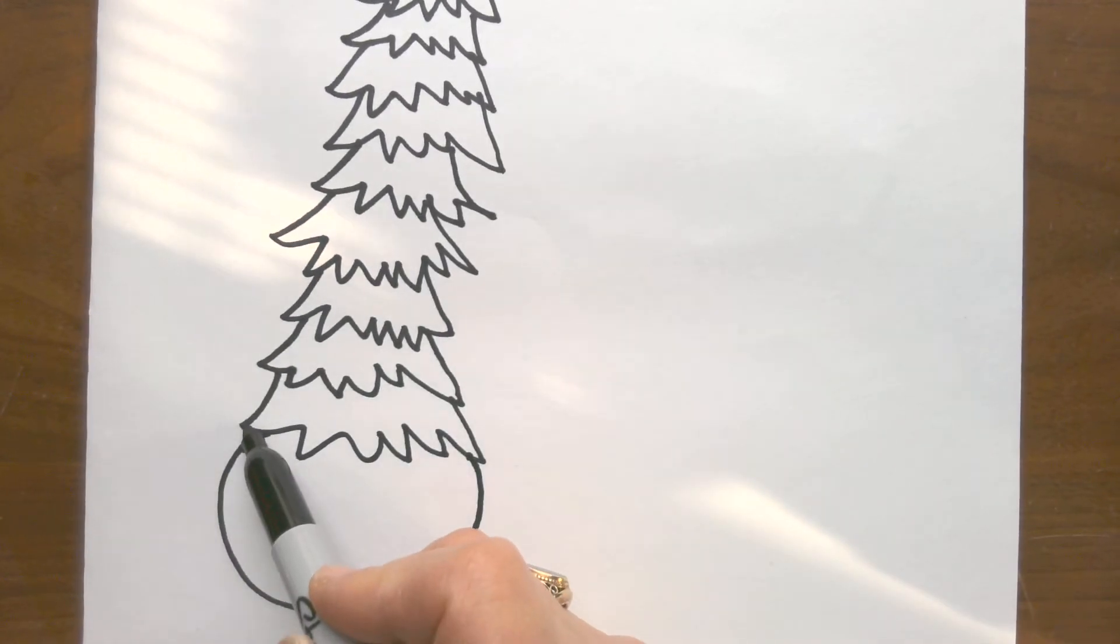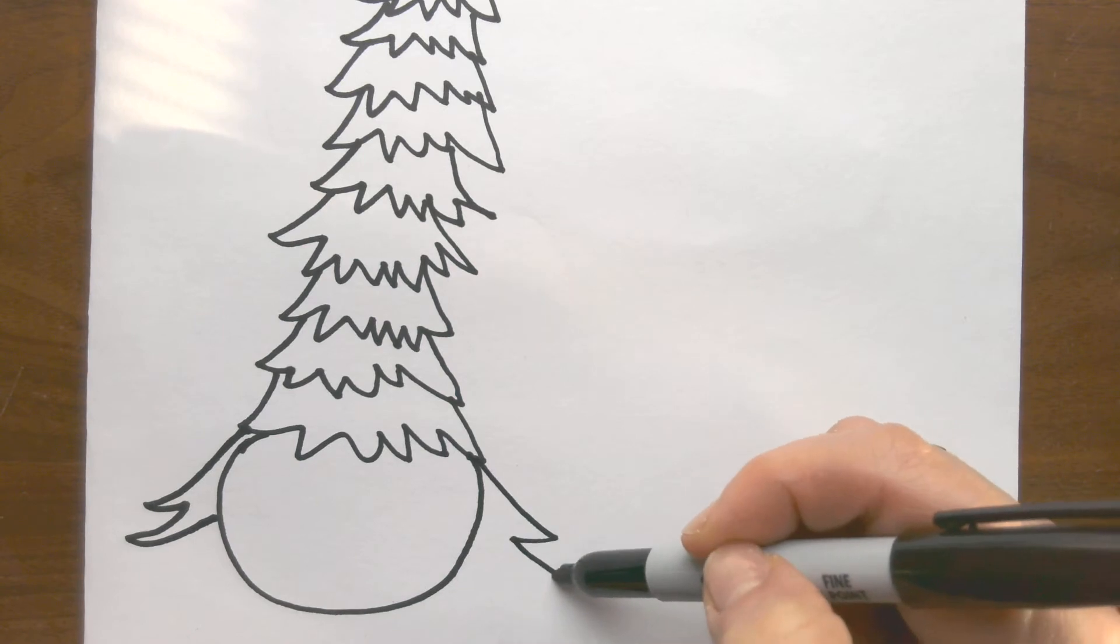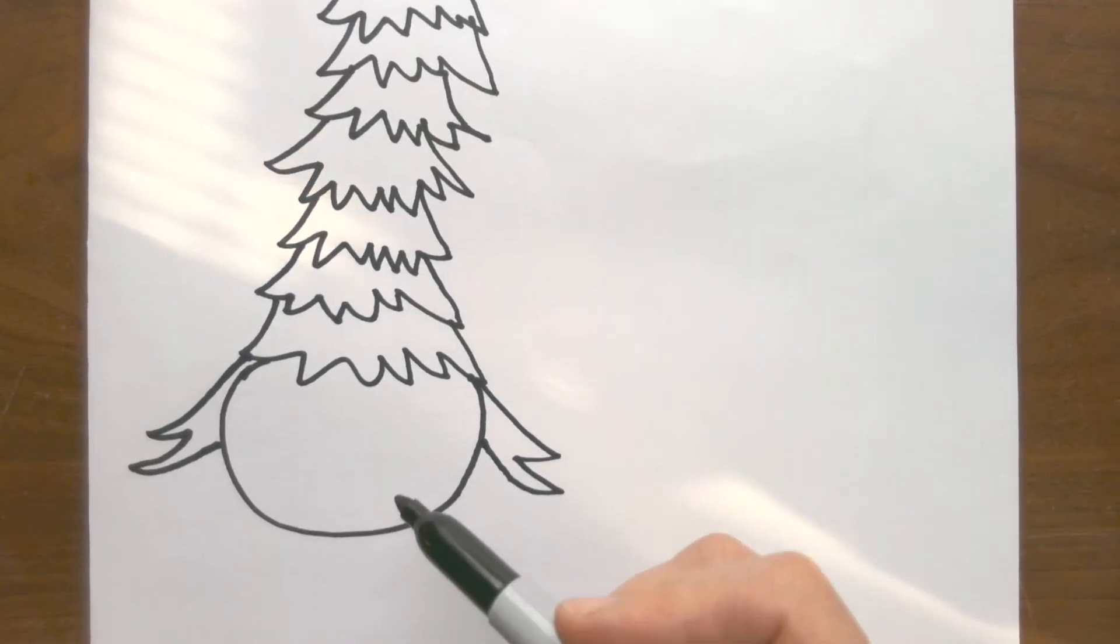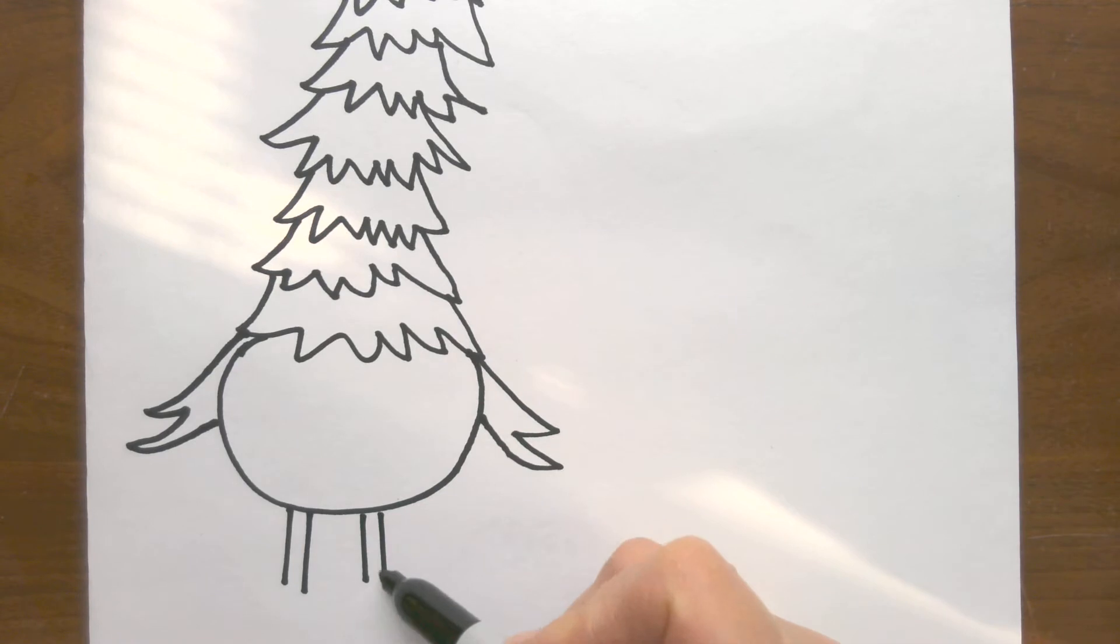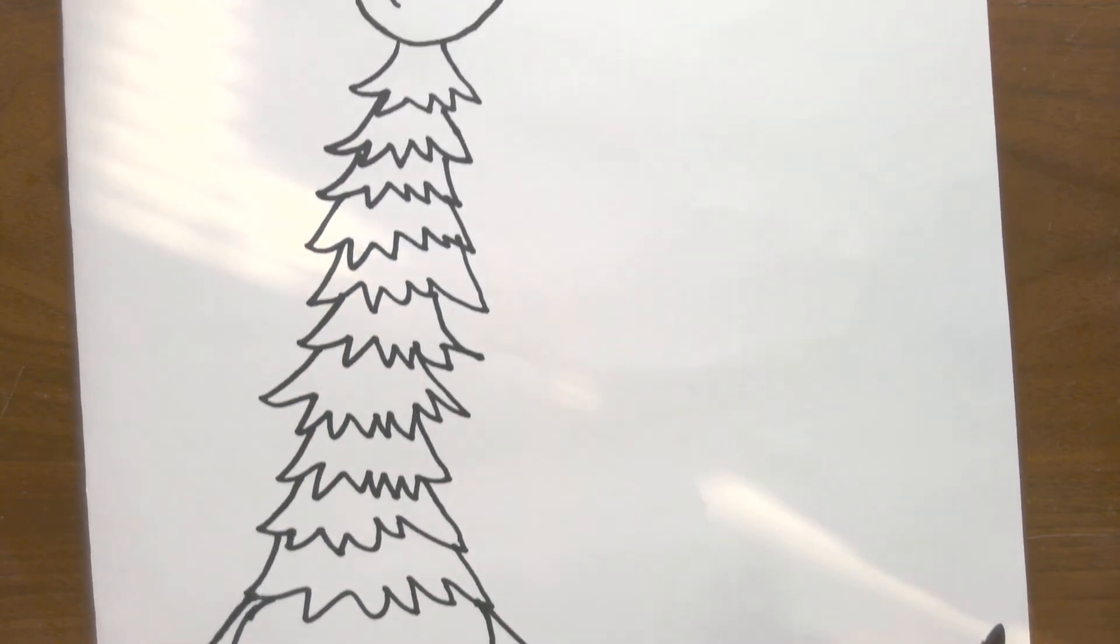Then we're going to have his little wings. Just go ahead and draw it in like this. For his feet: two lines, two lines, and then a zigzag line for the feet. So there is our bird.